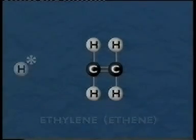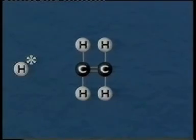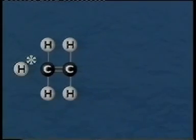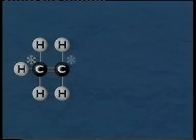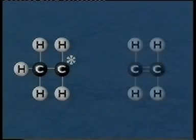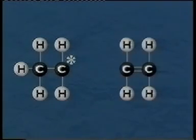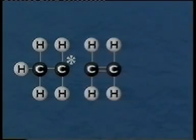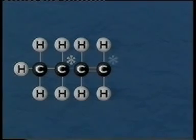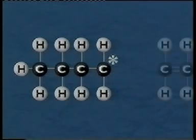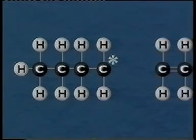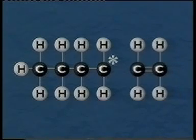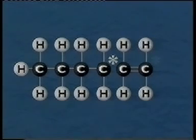When a chemical initiator is added, it splits the double bond between the carbon atoms. The ethylene becomes reactive and attracts and reacts with other ethylene molecules. It is a chain reaction, building up a chain that can be thousands or sometimes millions of units long.